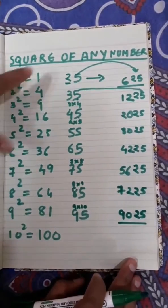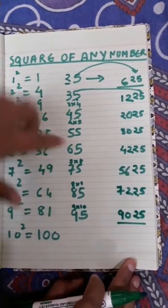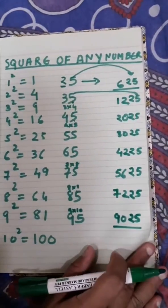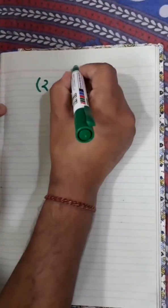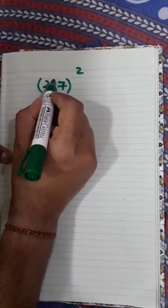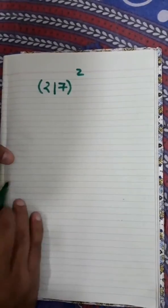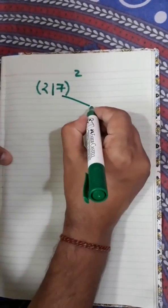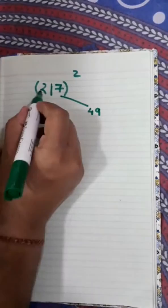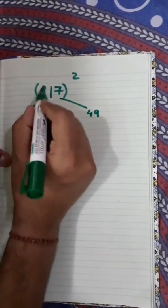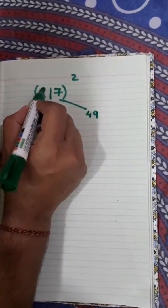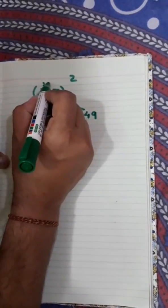This is the way to find the square of any number that ends with 5. Now we will find out squares of some other numbers. Suppose we want 27². First divide this into two parts: write the square of the last digit on the right — 7² = 49 — and the square of the first digit on the left — 2² = 4.